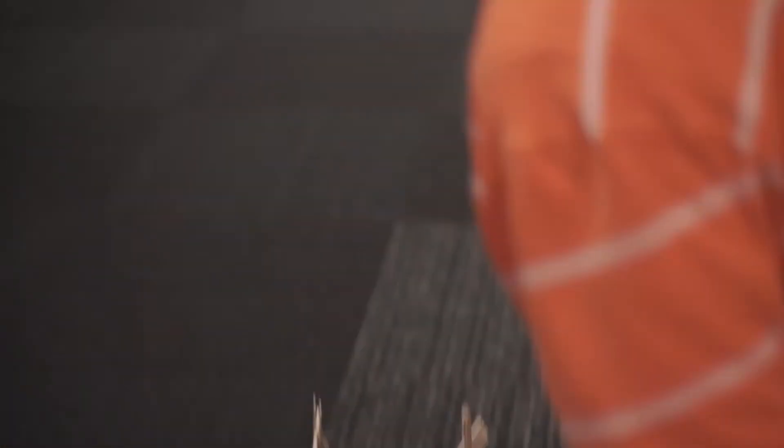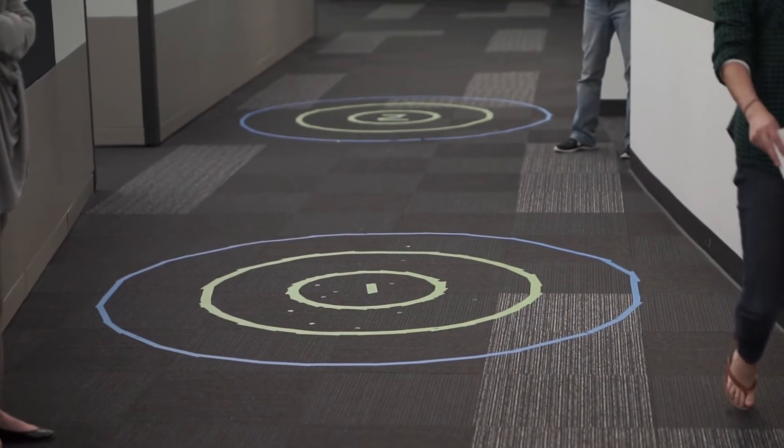So you can see on the floor behind me we've actually got two bullseyes laid out. One's at 15 feet and the second one's at 30 feet and our teams have been tasked with taking three launches and getting as many points as possible.